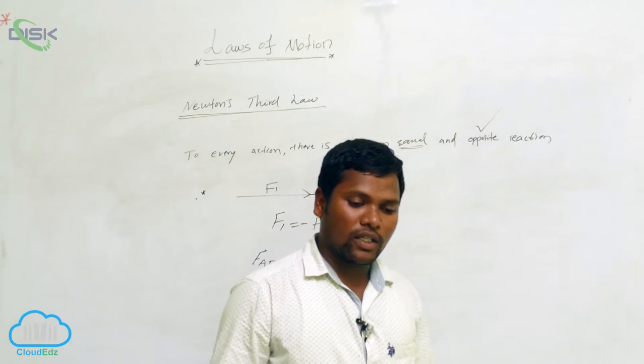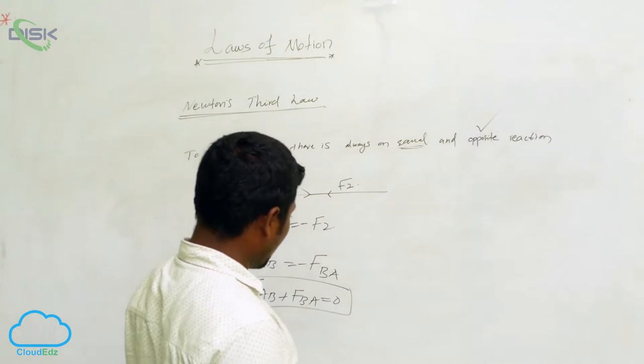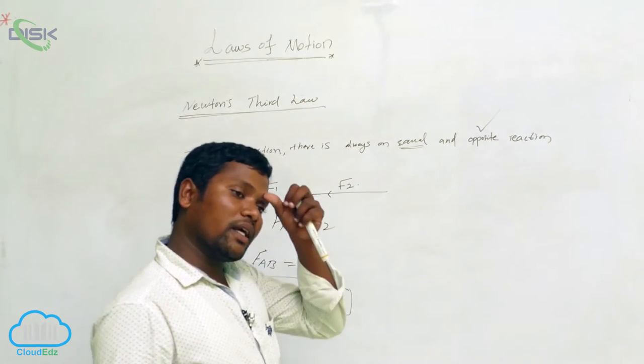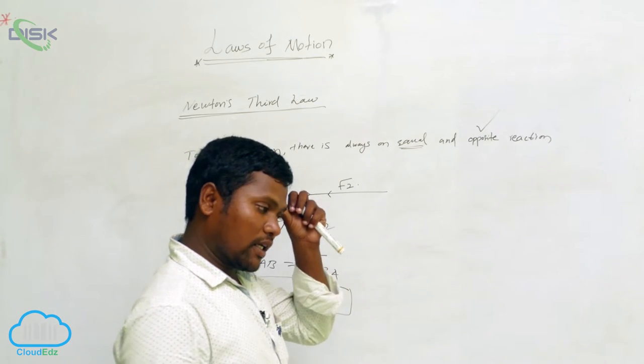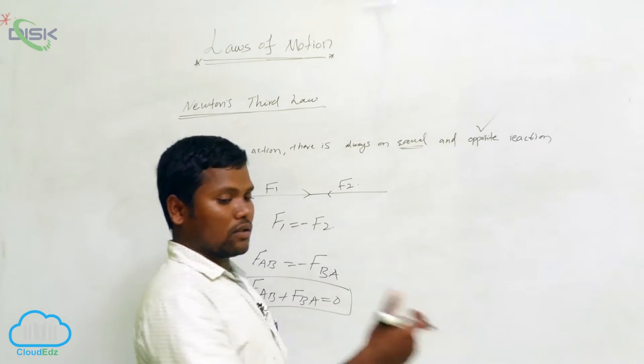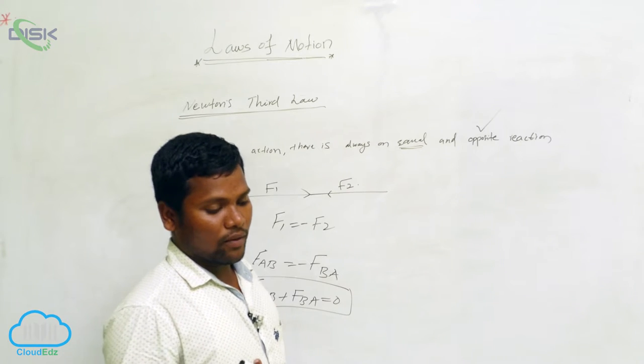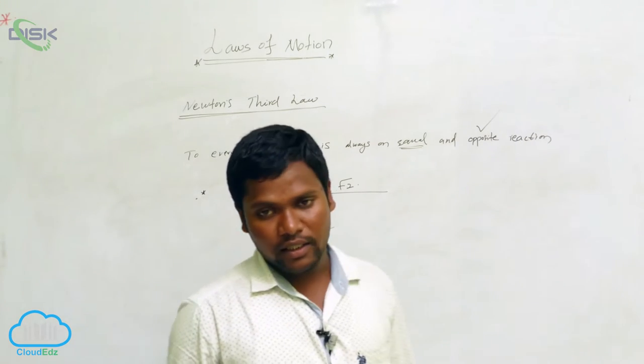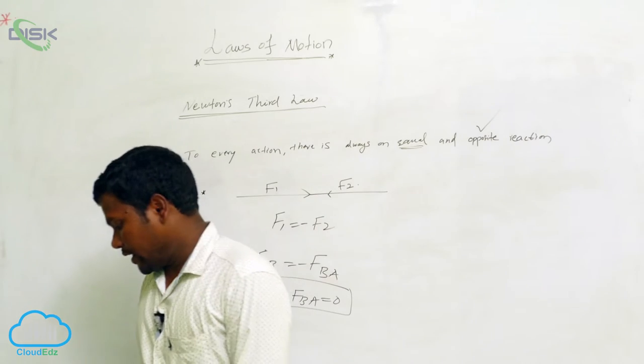Many examples means jet rocket is working on this principle. There are many examples. You are going forward, the reactions will come backward. Based on this principle, the vehicle is running. There are many applications.